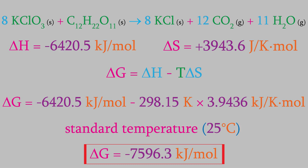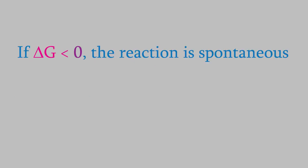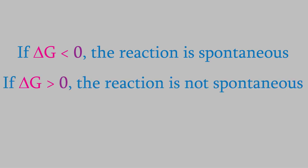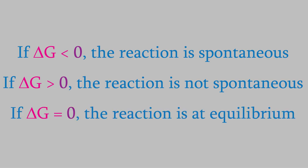Gibbs determined that if the value of delta G is less than zero, the reaction is spontaneous. If it's greater than zero, the reaction isn't spontaneous. It's important to notice that if delta G is greater than zero, that doesn't mean the reaction is impossible, just that it isn't spontaneous, which means that we'd have to put energy into the system in order to perform the reaction. Finally, if delta G is exactly equal to zero, the reaction is at equilibrium.